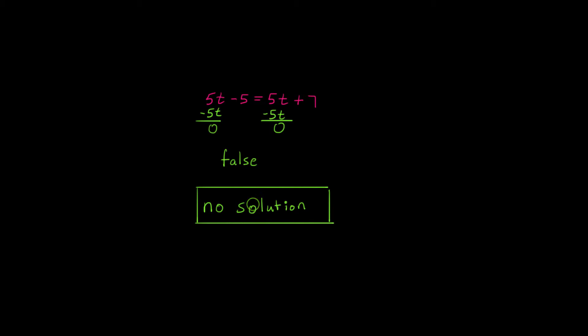So no solution is telling me if I were to substitute a value in for t on this side of the equation and on the other side of the equation, I'll never be able to make both sides equivalent to one another.